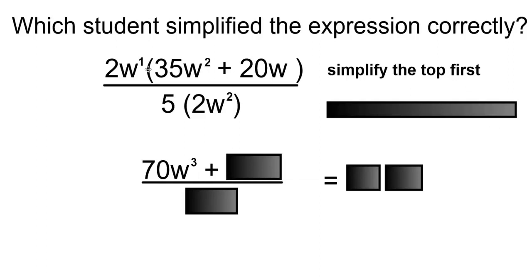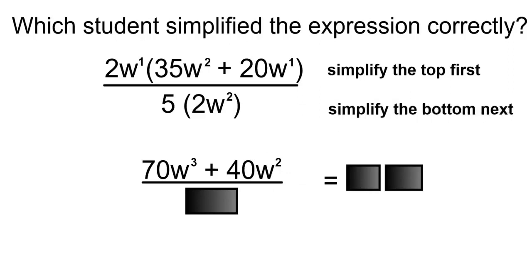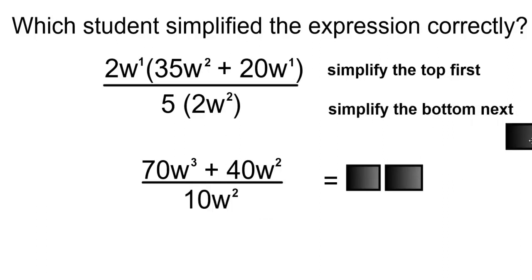Plus 2 times 20 is 40. And W to the 1 times W to the 1 times W to the 1 will be W to the 2 as you add the exponents together. Simplify the bottom next. 5 times 2 is 10, so that will be 10W to the 2.